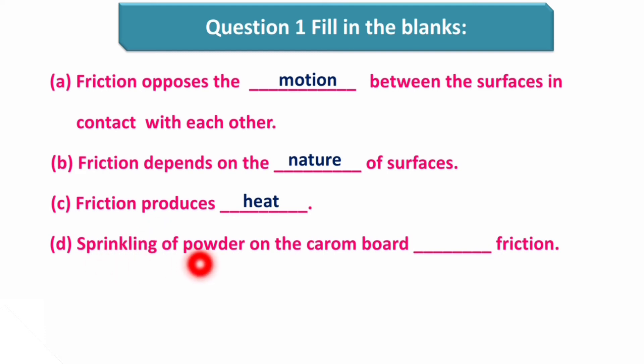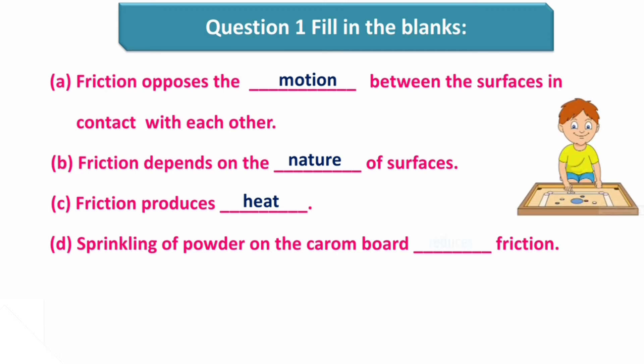Next: sprinkling of powder on the carom board dash friction. Jab aap carom kheelte ho, tab uske upar carom board ke upar powder jo hai, wo sprinkle kerte ho. Wo kyu kerte ho? Friction kya hoga usse? Whether it would be increased or decreased? Answer is: it reduces friction. Usse friction reduce hota hai. Toh jab aap striker jo hai, wo strike kerte ho, toh easily woh move kar sakta hai.